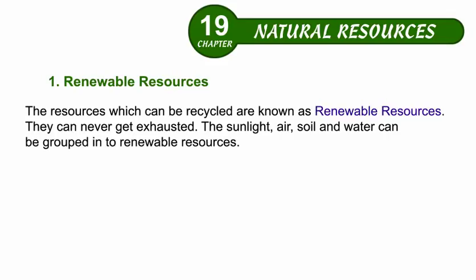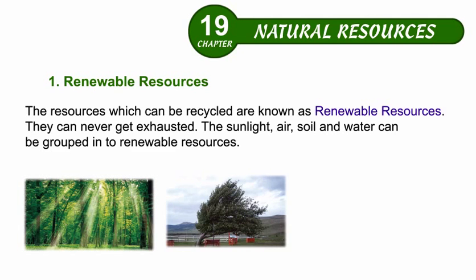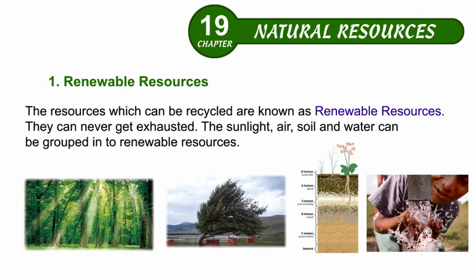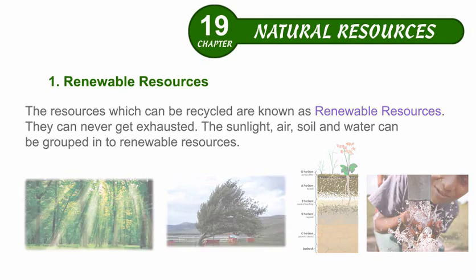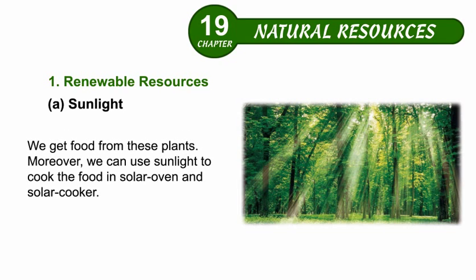Renewable resources can never get exhausted. Sunlight, air, soil, and water can be grouped into renewable resources. The sun's rays are a good source of energy. This energy is converted into several chemical substances which are stored in different parts of the plants. We get food from these plants. Moreover, we can use sunlight to cook food in a solar oven and solar cooker.